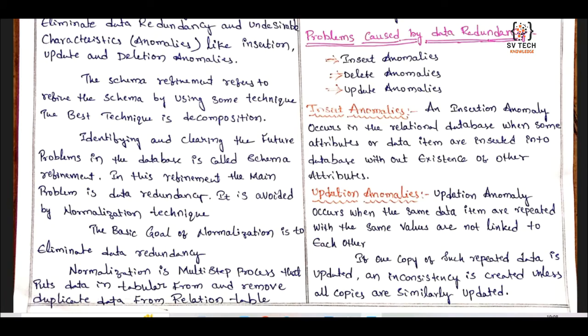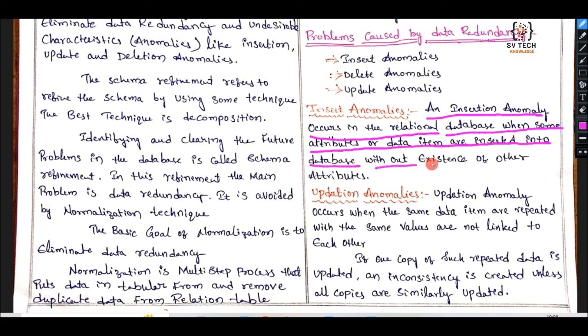Insertion anomaly: An insertion anomaly occurs in the relational database when some attributes or data items are inserted into database without existence of other attributes. So when we insert data into the database without certain attributes, this creates a problem which is called insert anomaly.